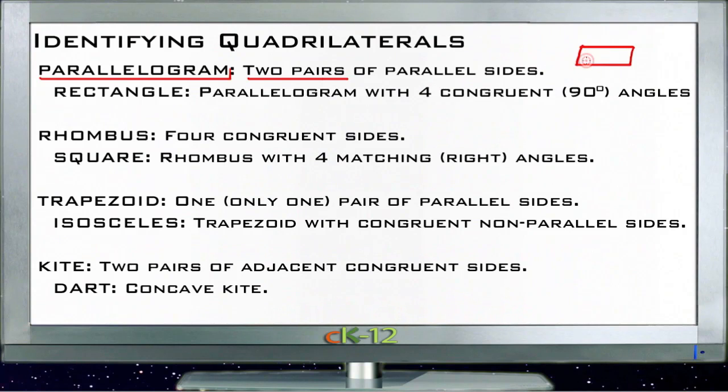It doesn't say anything about the lengths of either pair, just says that the pairs of sides have to be parallel. Now if you have a parallelogram with four 90 degree angles, in other words if they come together at right angles like so here, then you have not just a parallelogram but specifically a rectangle.